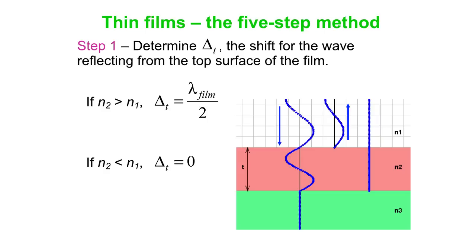Step one of our five-step method, just focus on the wave that hits the top surface of the film and that either has a flip or it doesn't. If it has a flip, then effectively it's got a path length difference of half a wavelength, half a film wavelength. If it does not flip, which happens when N2 less than N1, then we say the shift is delta t equals zero.